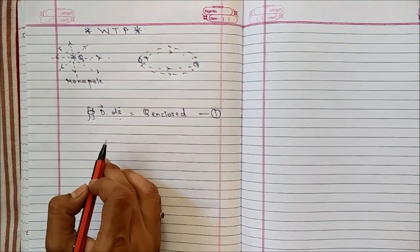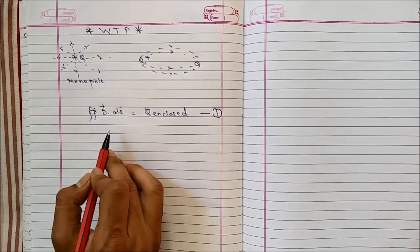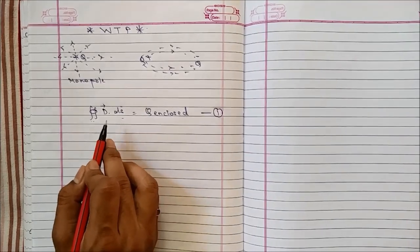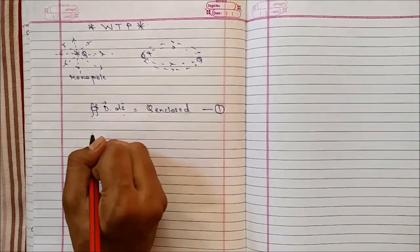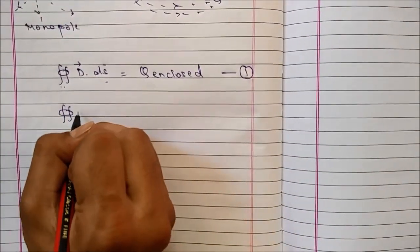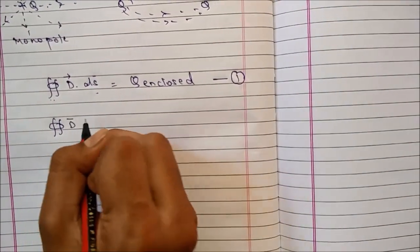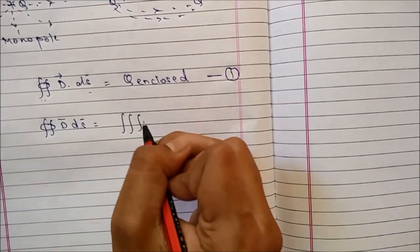It states that any closed surface integral of any vector can be converted into a volume integral by taking the divergence of that vector. So mathematically, it is...